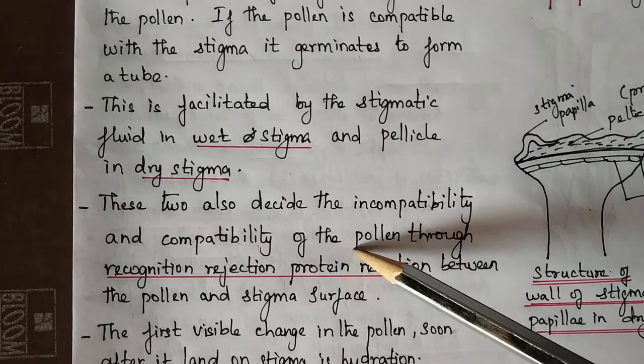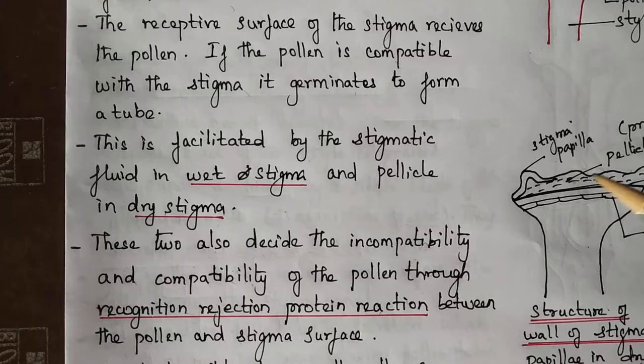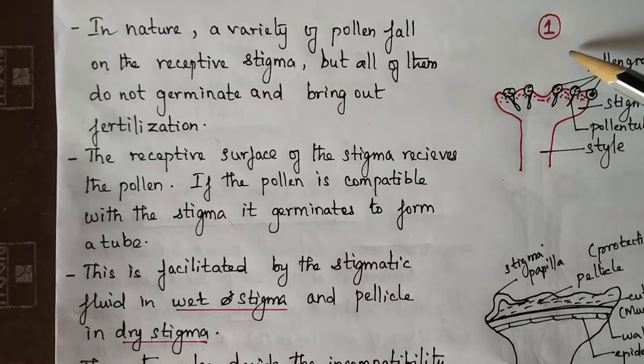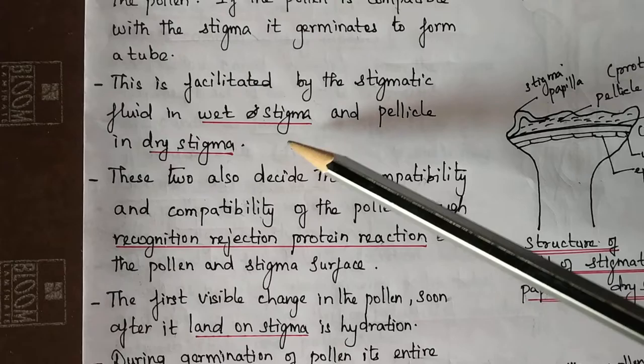Compatibility and incompatibility of the pollen are determined through recognition in the stigma region. The stigma region is the site of recognition, rejection, and protein reaction between the pollen grains and stigma.